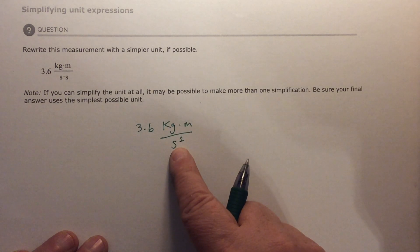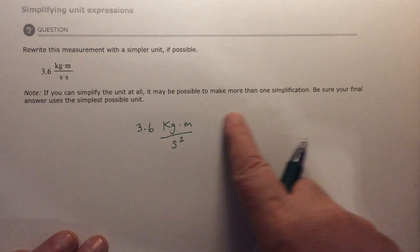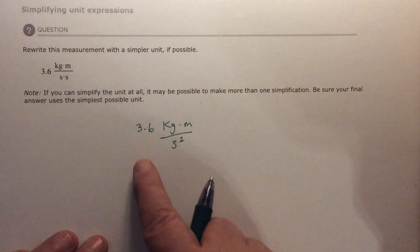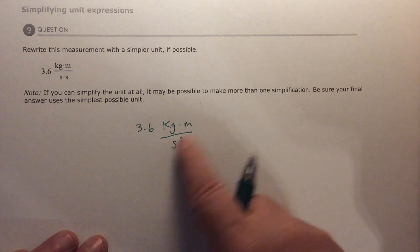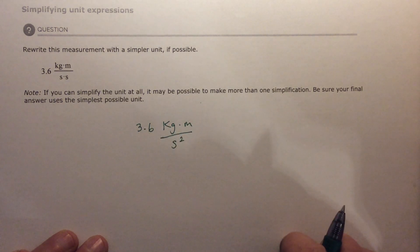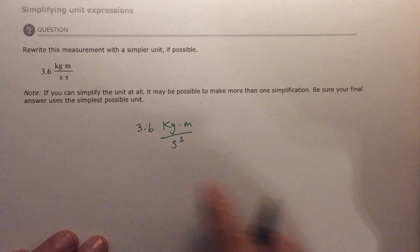You could also put the seconds on the top if you wanted everything along the top, and then in that case, it would be 3.6 kg times m times s to the minus 2, and then that would be along the top with no bottom. This is probably how I would write it if I were doing this problem. Okay, thank you.